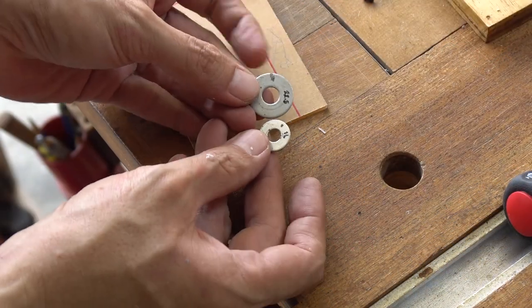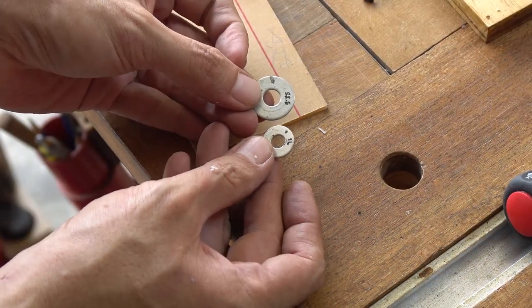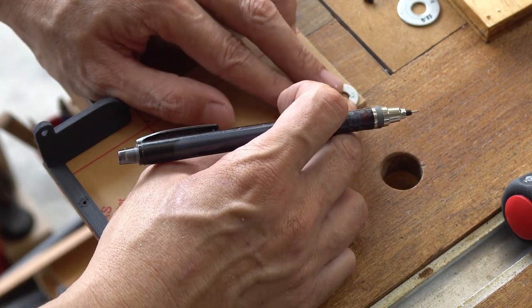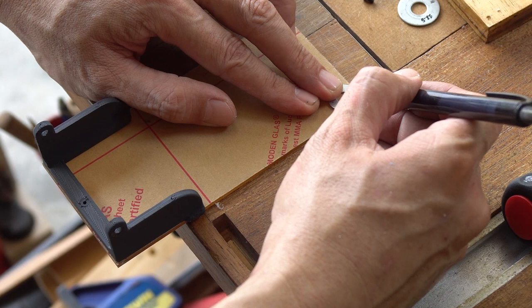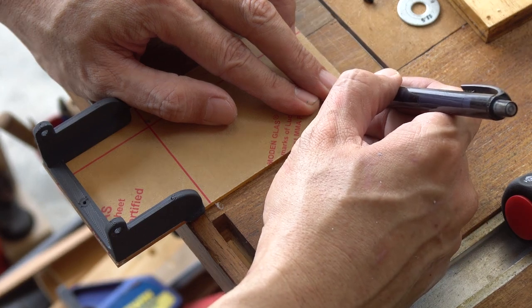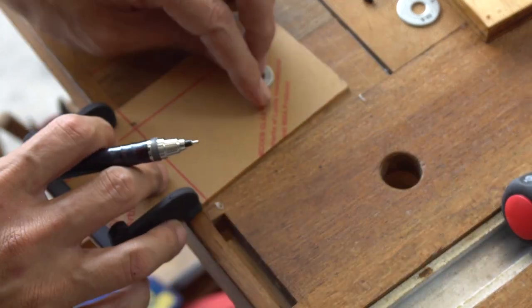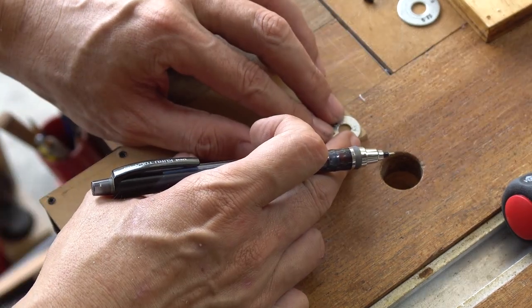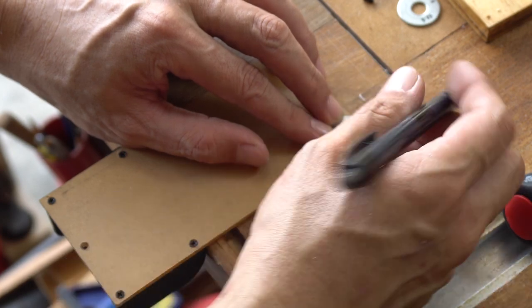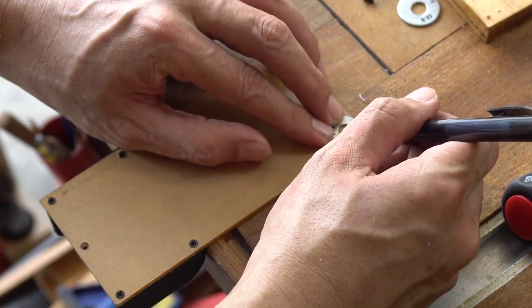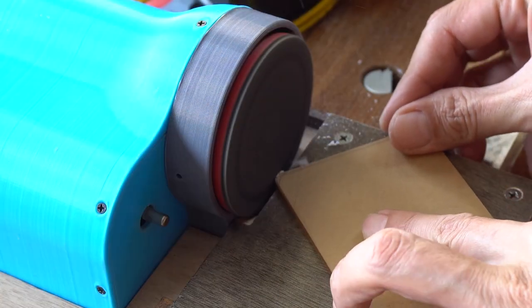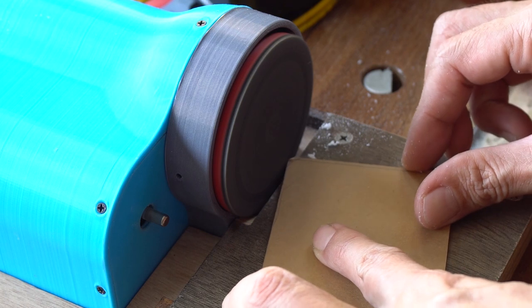To create fillets on the bottom corners of the plate, I'll use a washer to trace the desired shape. Then I'll use a mini sander to carefully grind out the fillet on each corner.